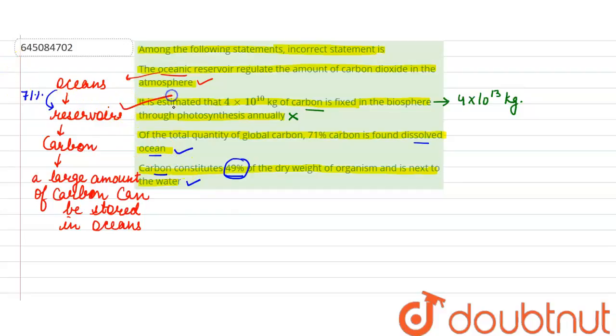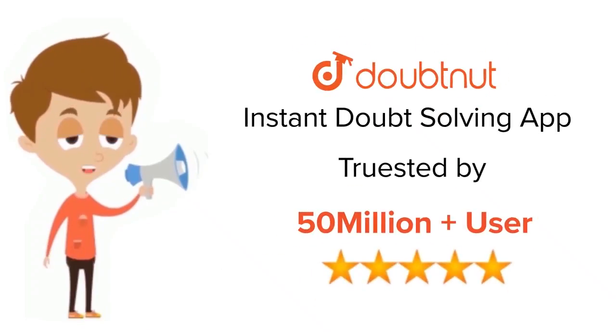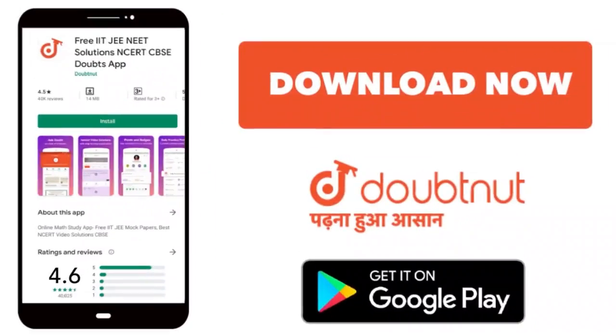Here the correct answer will be B, which is our incorrect statement. Thank you students. For class 6-12, IIT-JEE and NEET level, trusted by more than 5 crore students, download Doubtnet today.